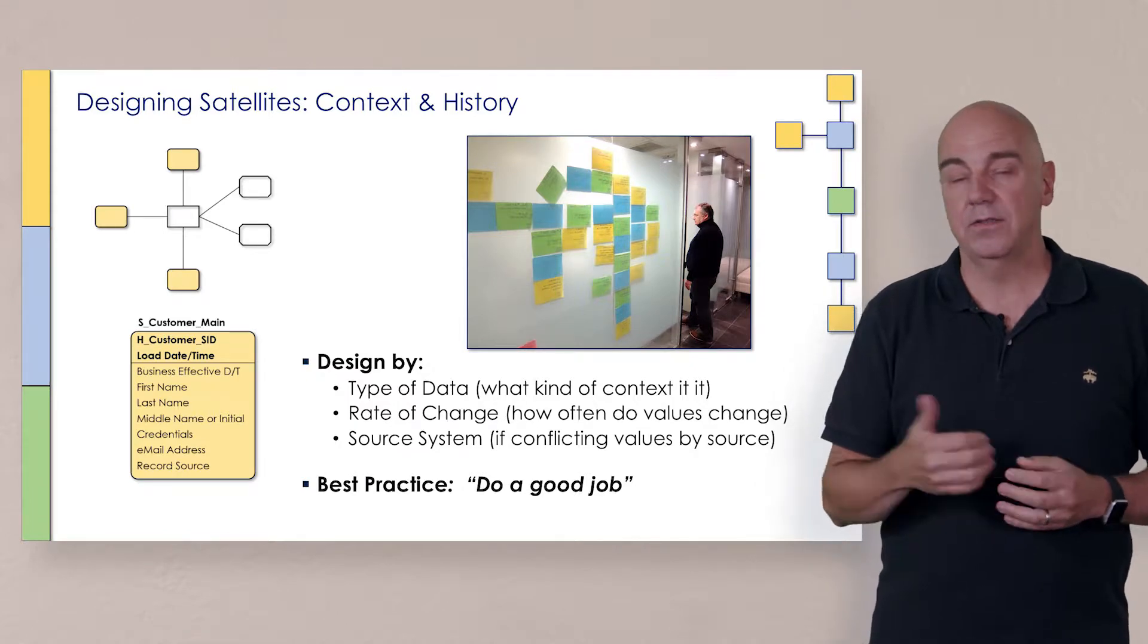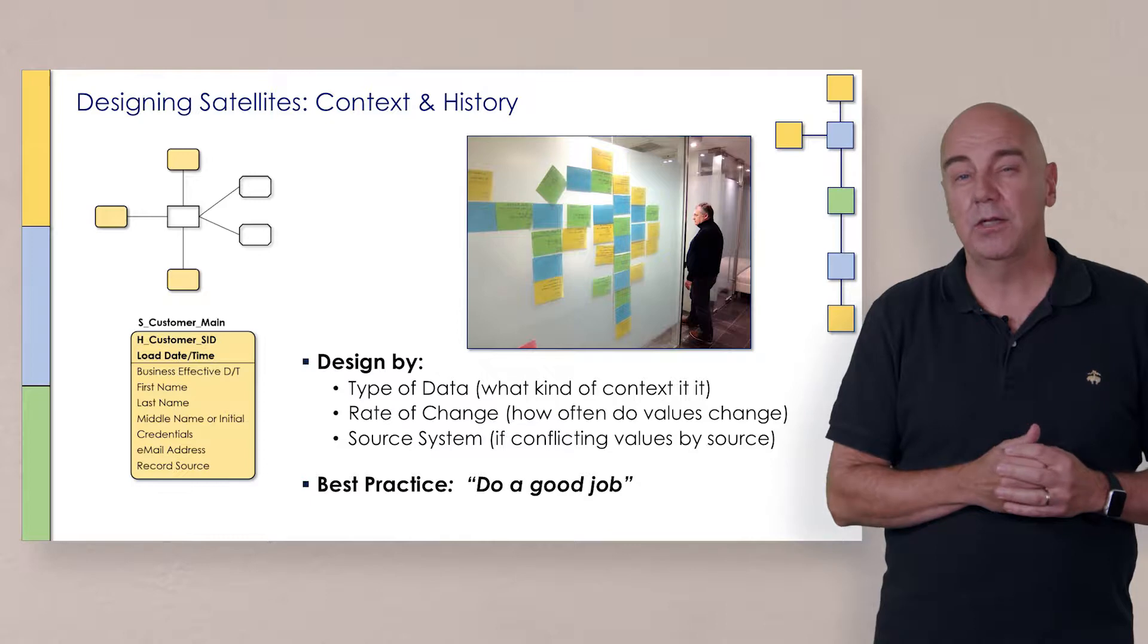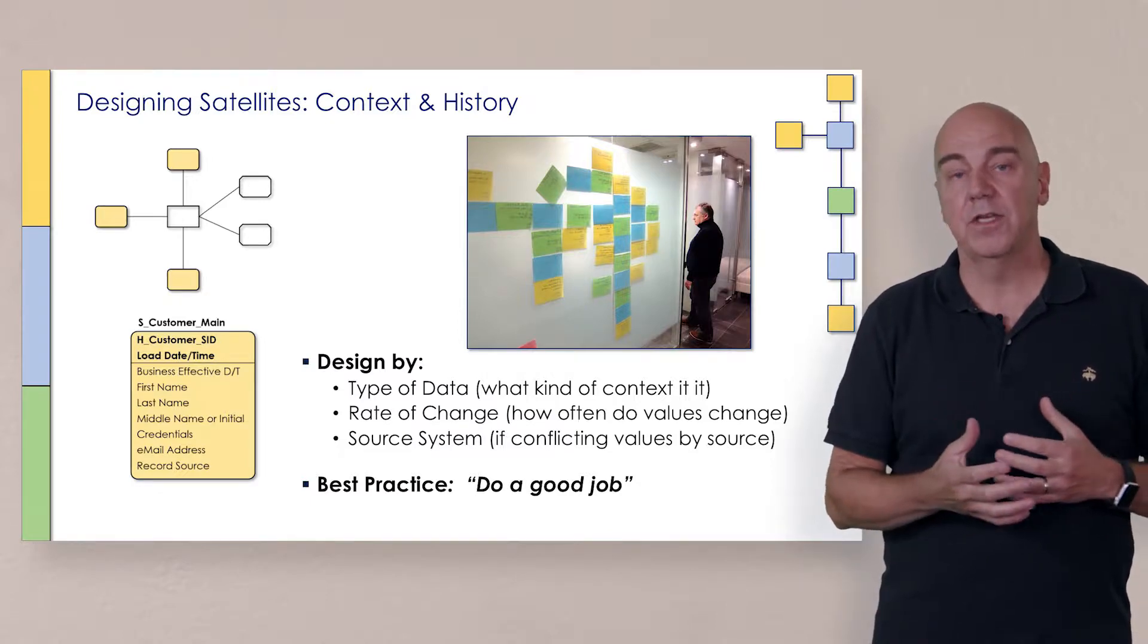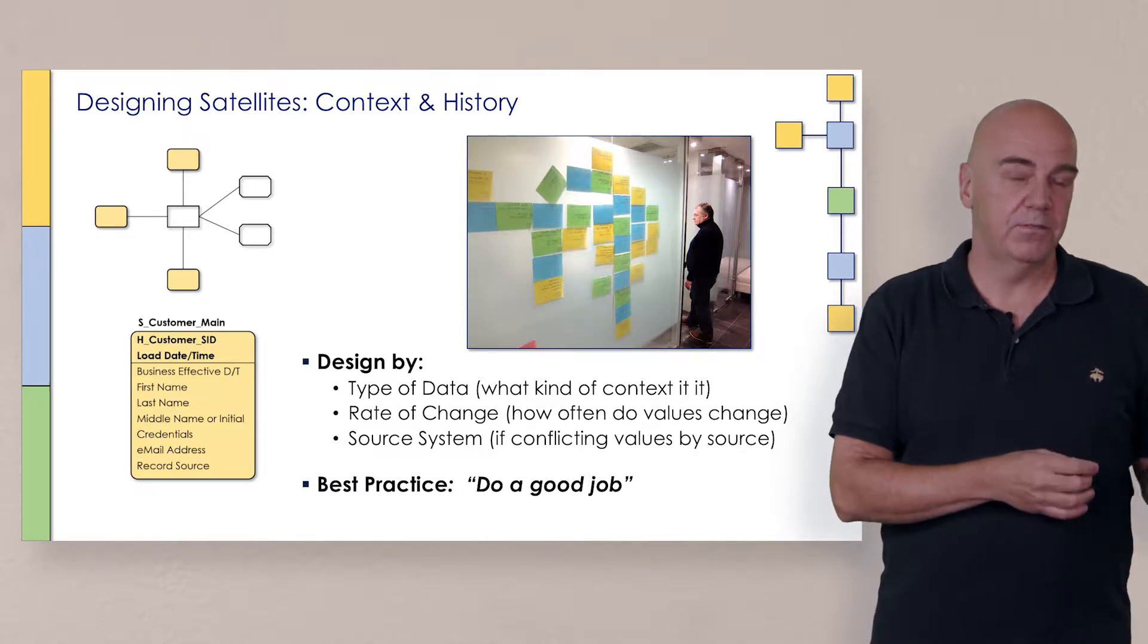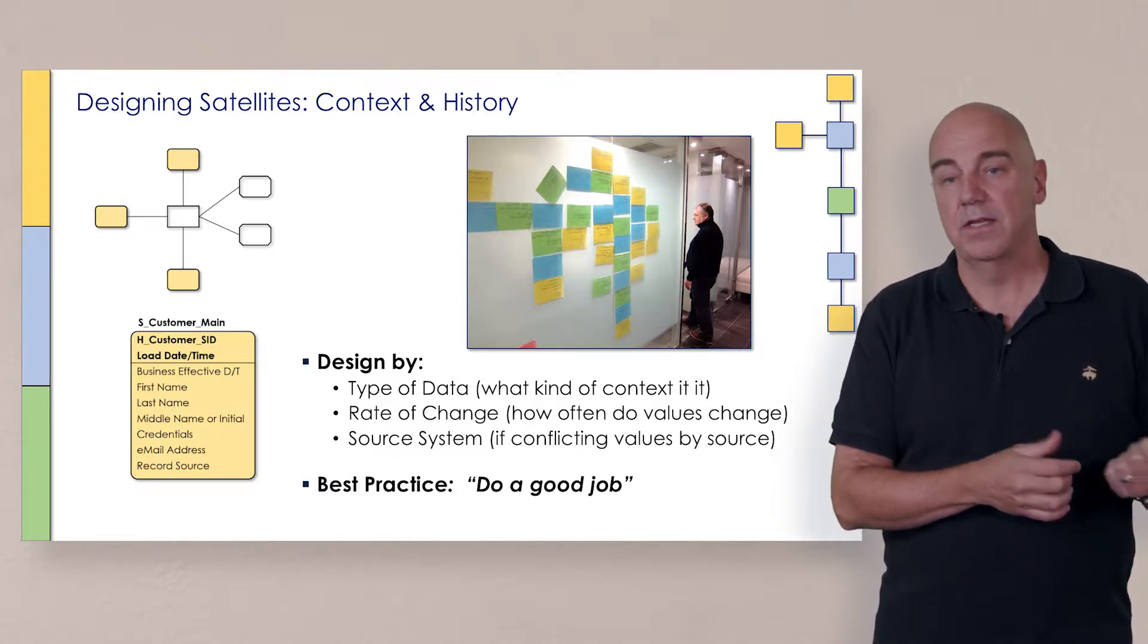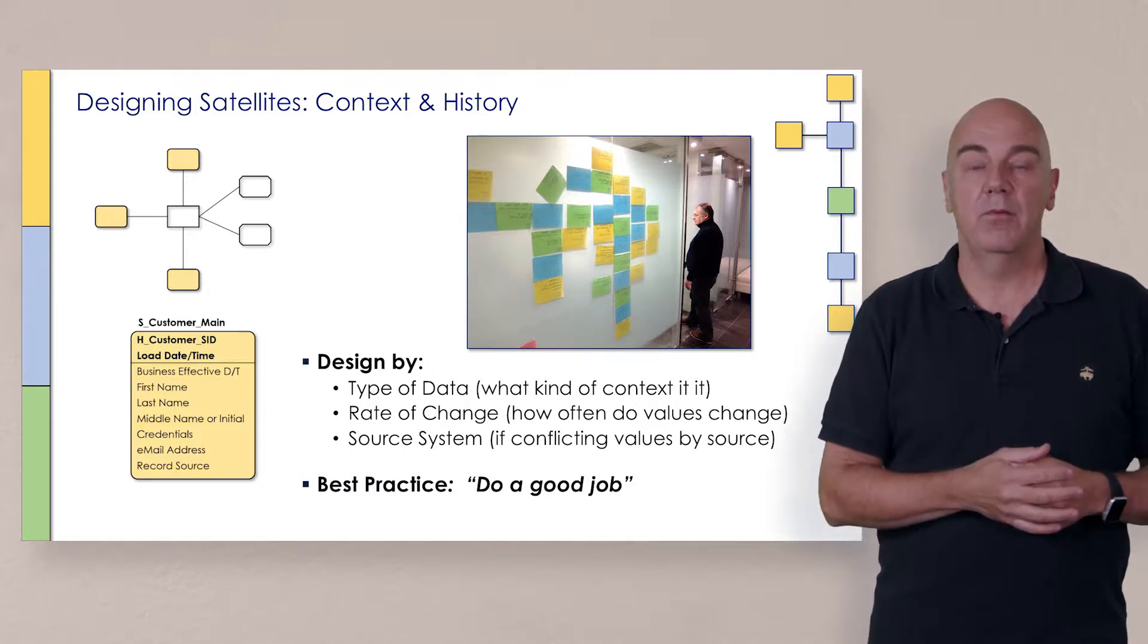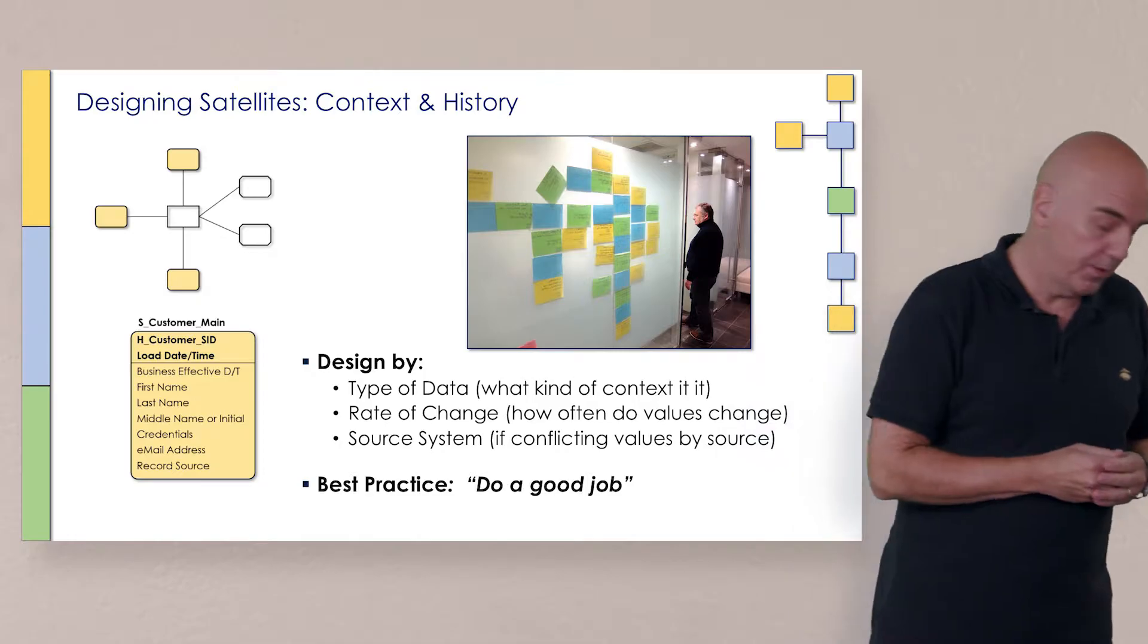And then of course, the last one is source system. So is there a reason why we should separate by source system? Well, only if the values for the same attributes would conflict. Otherwise, if it's for different instances of CBCs from different sources, different attributes, of course, we would not want to separate them. Let's take a look at the board and see what might happen there.